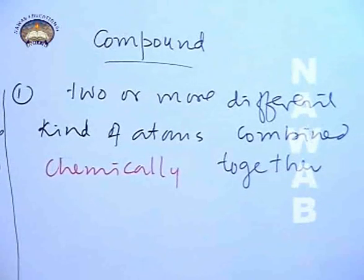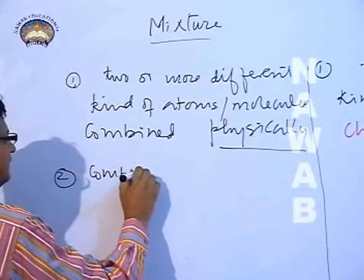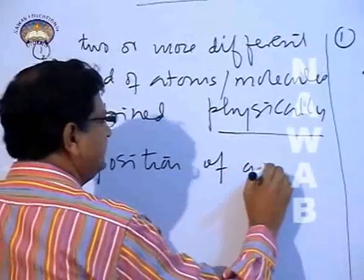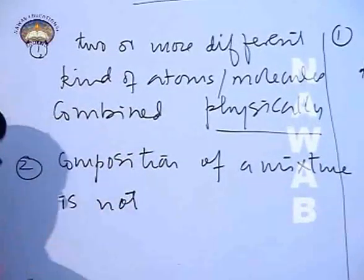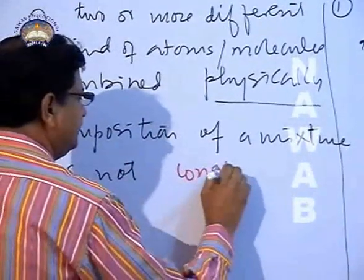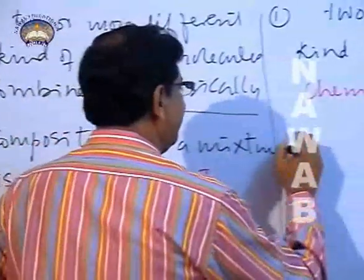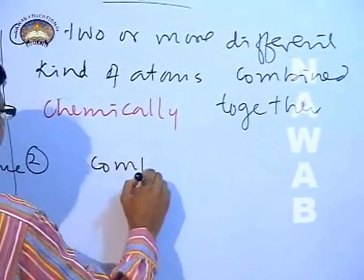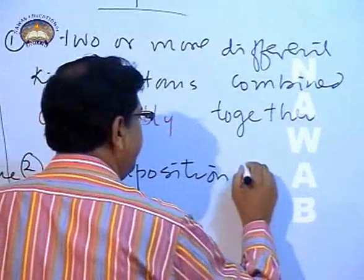Number two difference: the composition of a mixture is not constant — it can be varied. While the composition of a compound is always fixed.